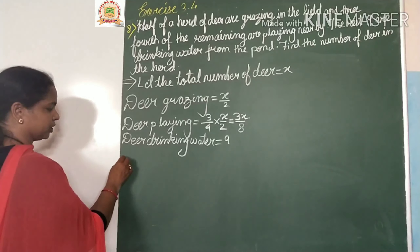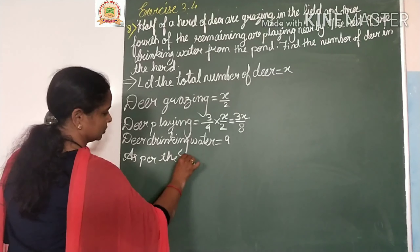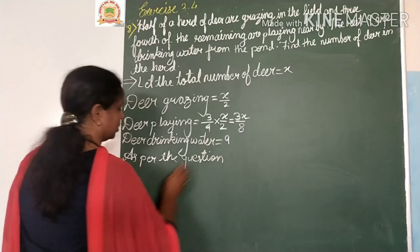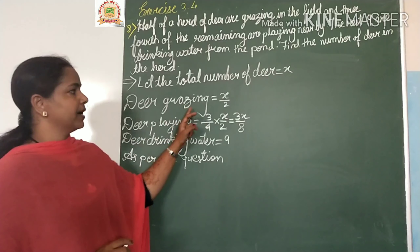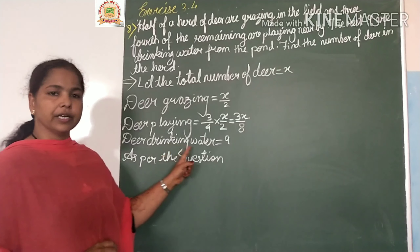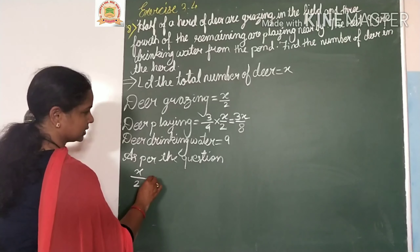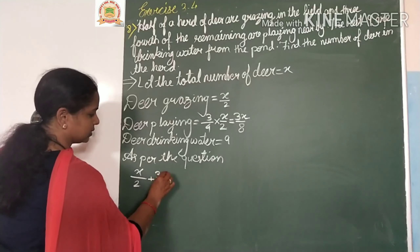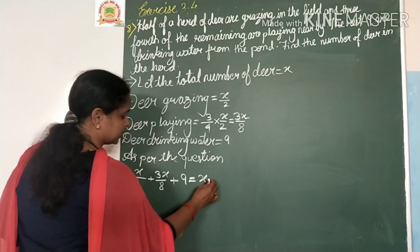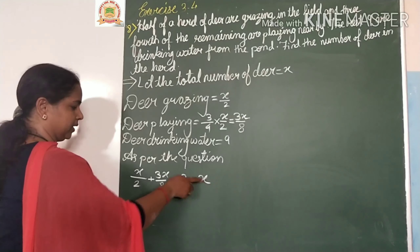As per the question, total number equals deer grazing plus deer playing plus deer drinking water, so x by 2 plus 3x by 8 plus 9 is equal to x, where x is the total number of deer.